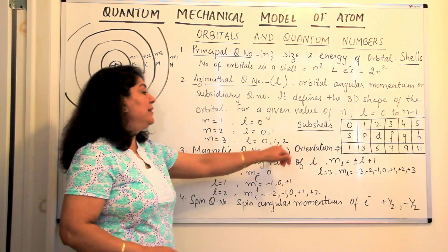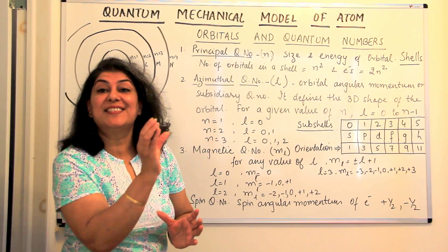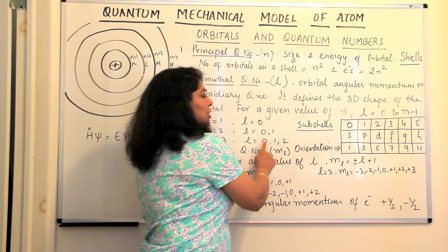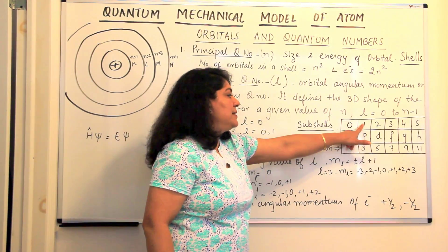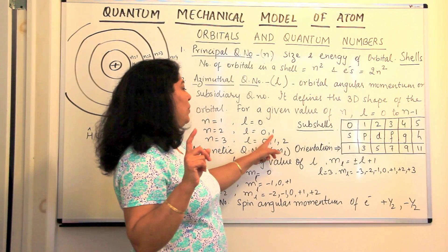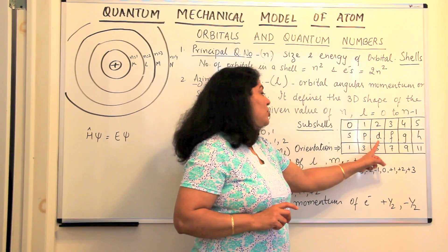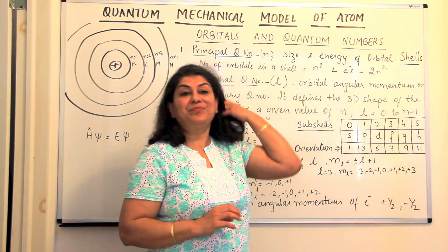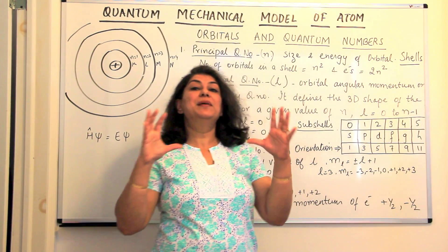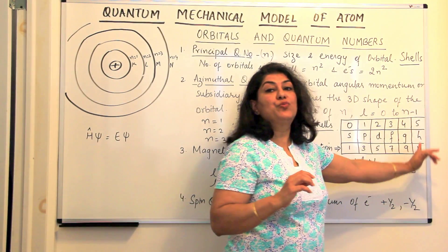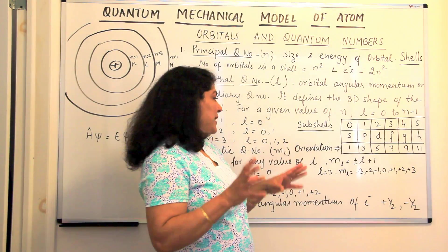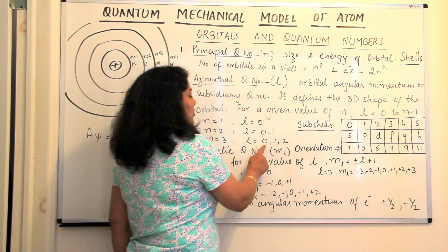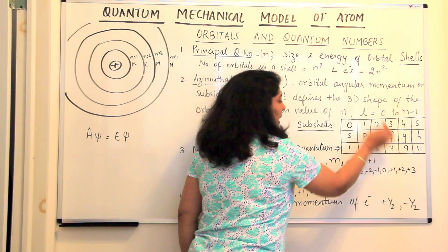These sub-shells have been given names using letters. The sub-shell with L=0 is called S; L=1 is called P; L=2 is called D; L=3 is called F; L=4 is G and L=5 is H. Mainly we deal with S, P, D, and F. Among all known elements, we go up to G. We still do not know elements which have an H sub-shell. So the sub-shells have been assigned the letters S, P, D, F, G, and H.